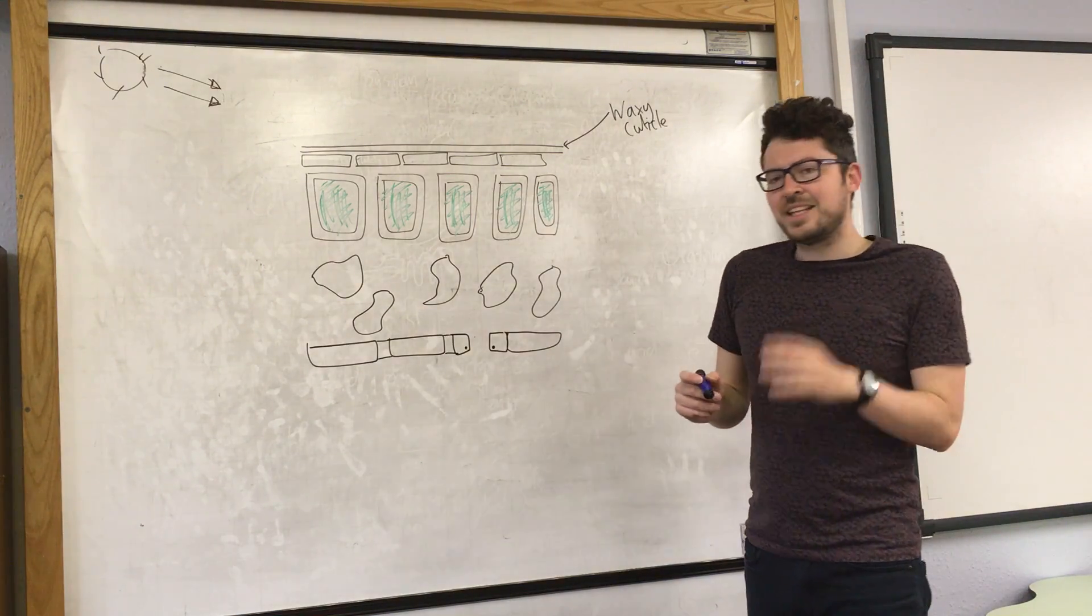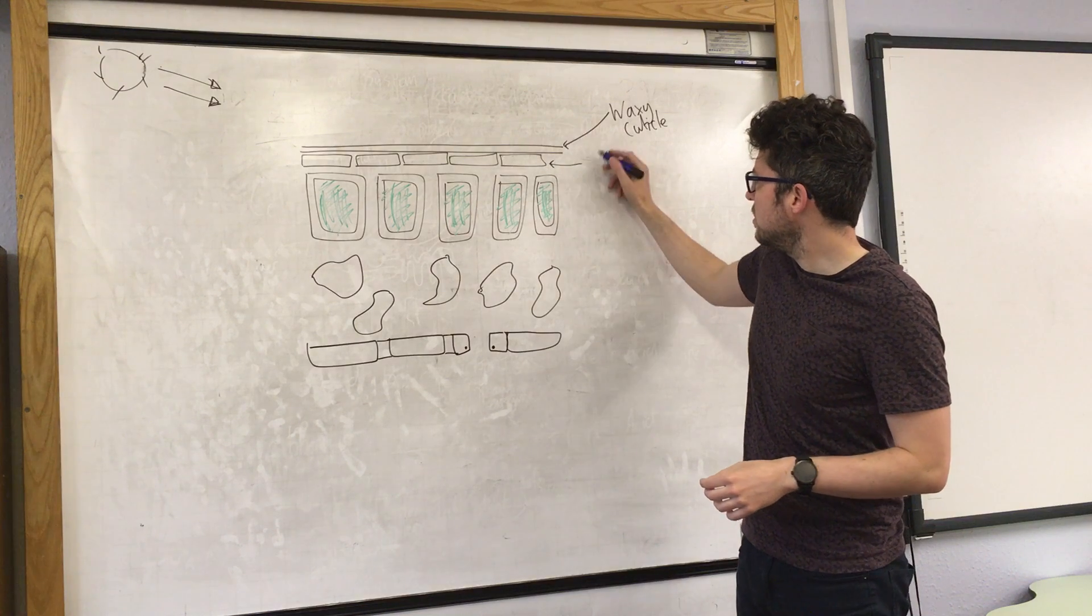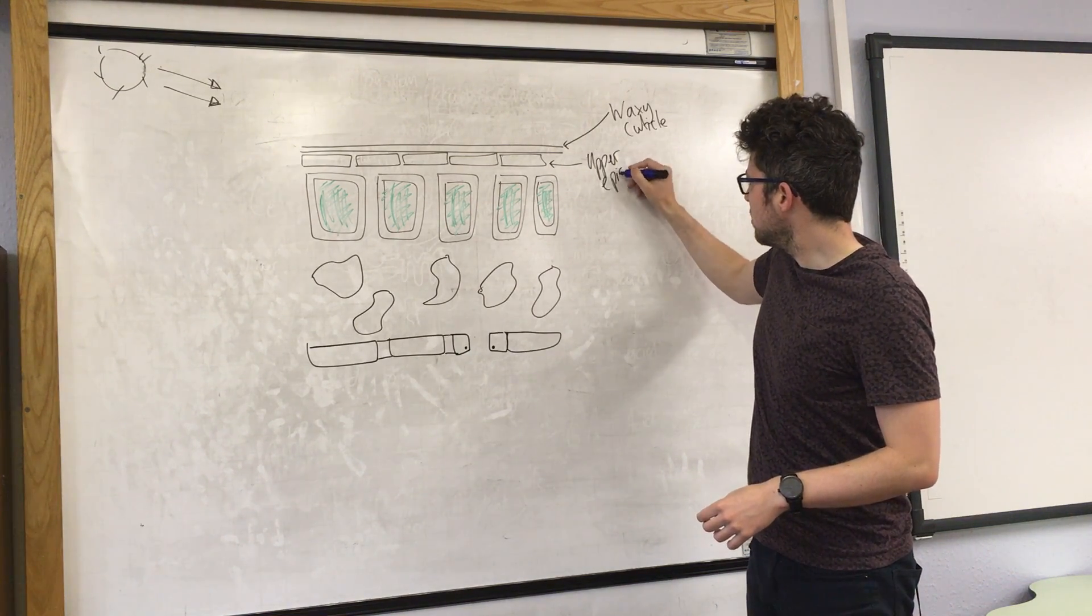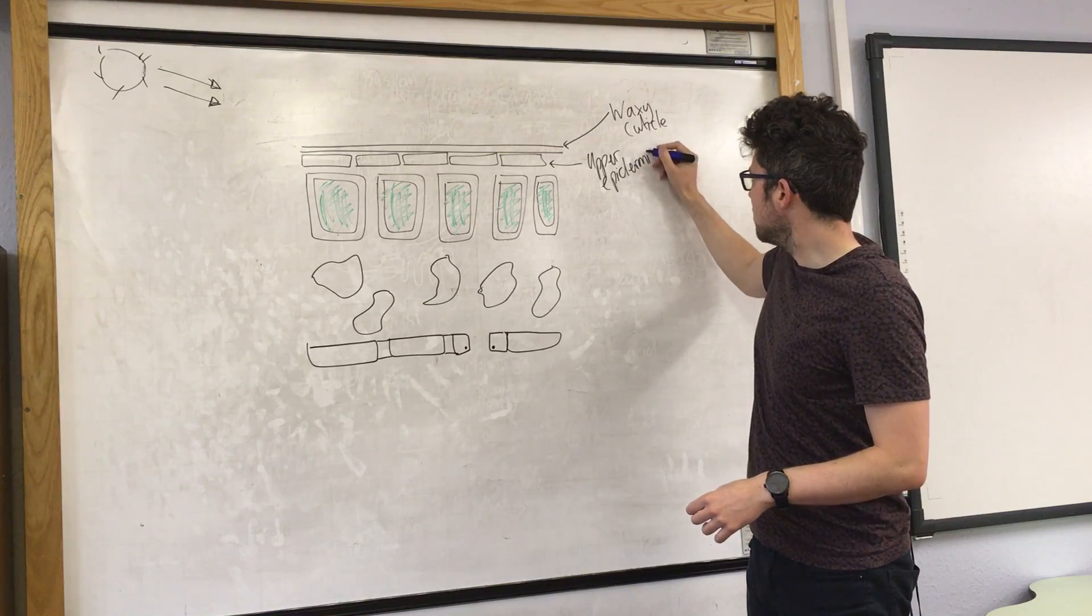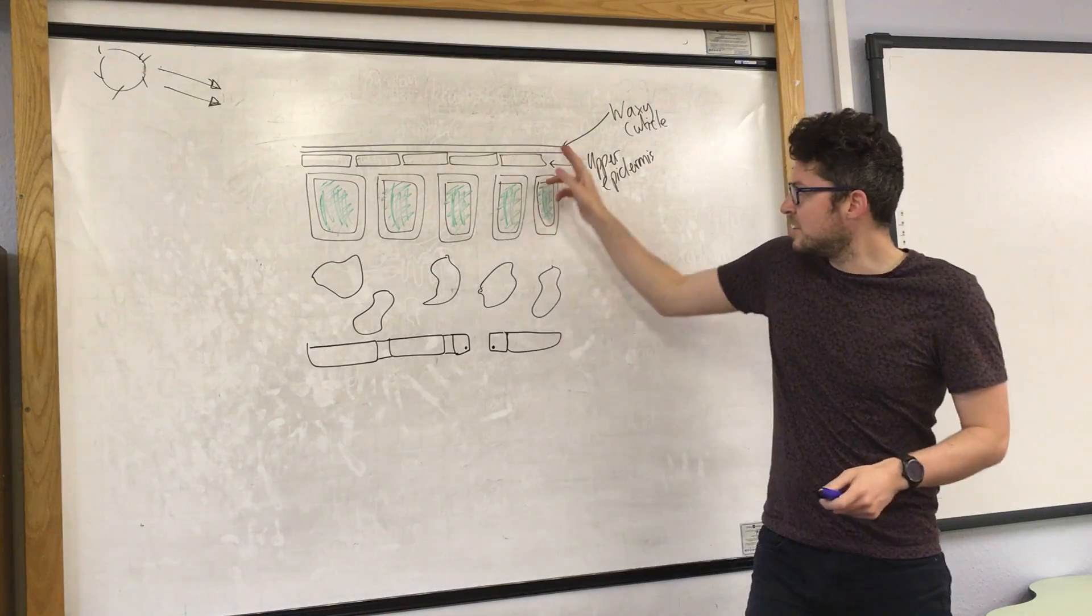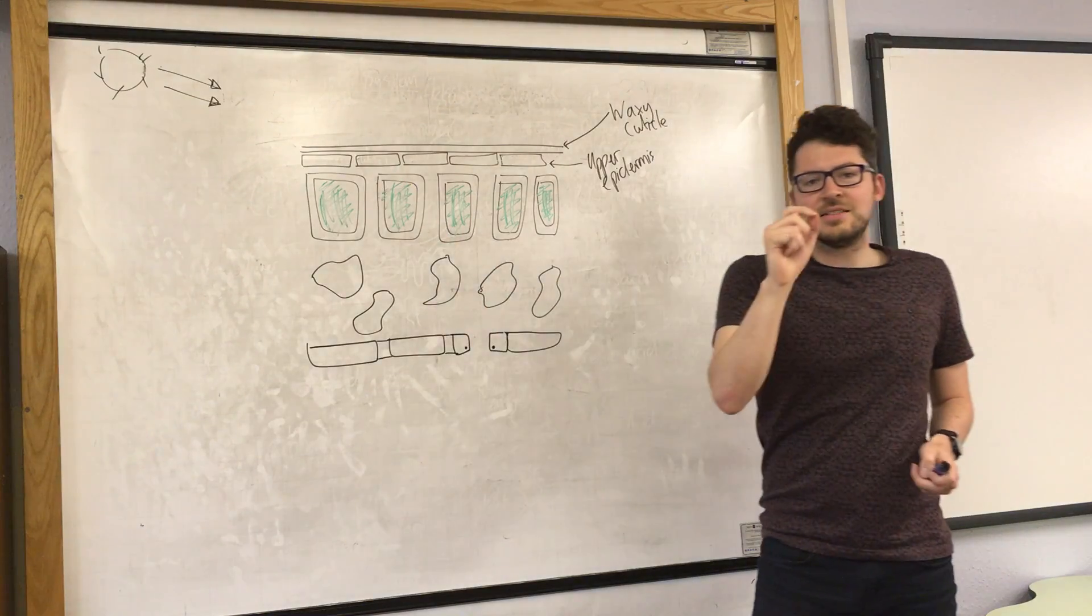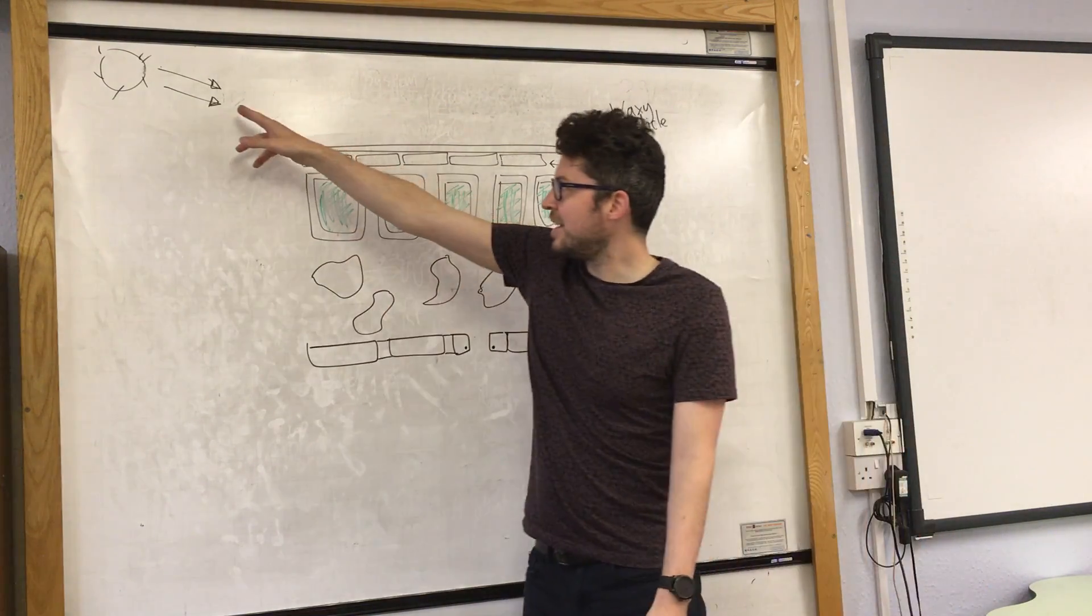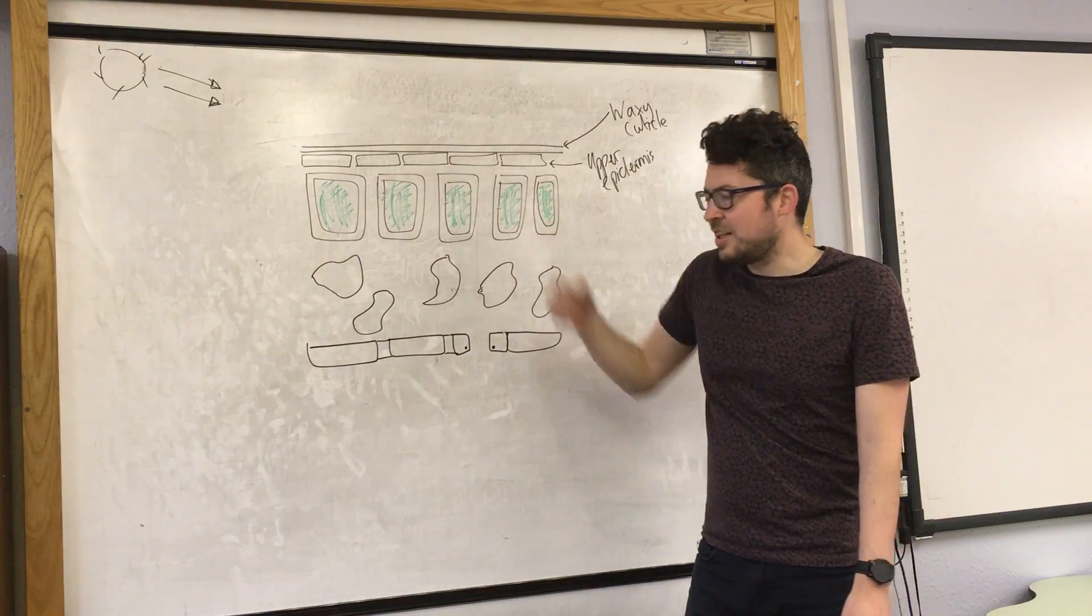The next layer down is the upper epidermis. That's this layer of cells here, and it is very thin. It's important that this layer is very thin because it needs to allow sunlight in to the next layer down.